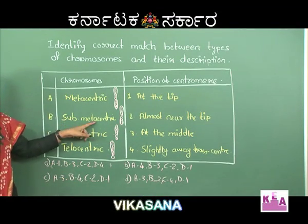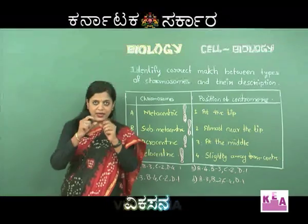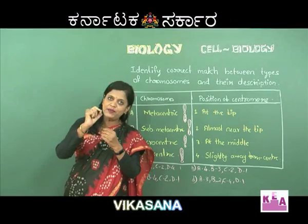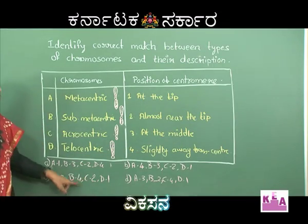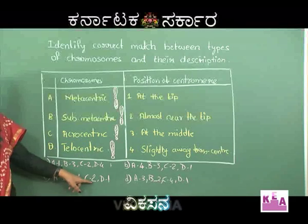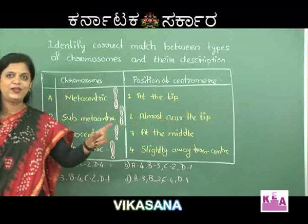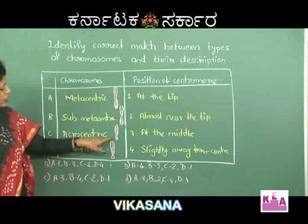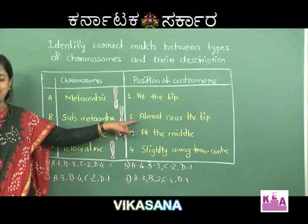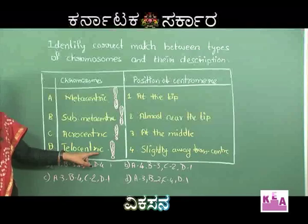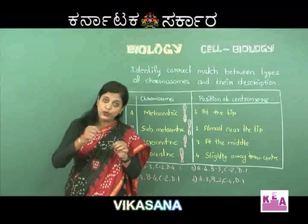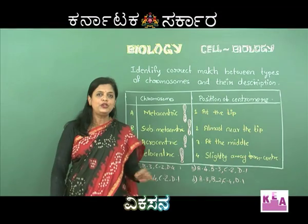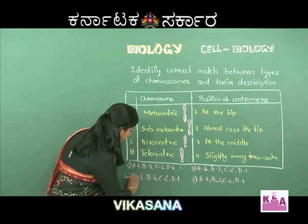Next, acrocentric C2-2: acrocentric matched to description 2, almost near the tip. That is also right - it has a small chromatid arm, so it is almost near the tip. Then D2-1: D is telocentric, and 1 is at the tip. Telocentric has the centromere at the very tip. All four match correctly, so option C is the right answer.